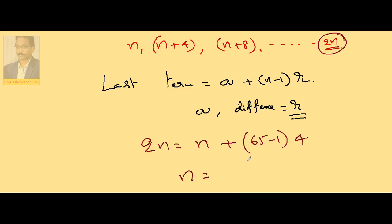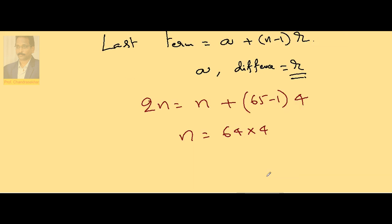So 2n minus n, n is equal to 64 into 4. So automatically this is 256 Hz.